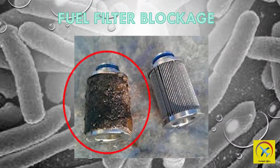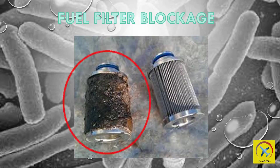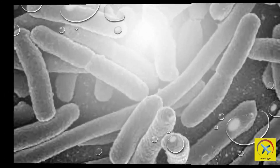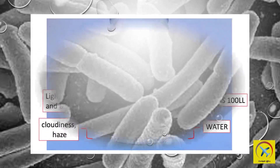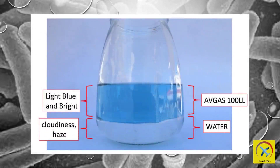Water occurs in aviation fuels in two forms: dissolved and free. All aviation fuels dissolve water in varying amounts depending upon fuel composition and temperature. Dissolved water in fuel is similar to humidity in air. Lowering fuel temperatures will cause dissolved water to come out of solution as free water, somewhat like fog comes out of air. The creation of free water occurs at a rate of about one part per million per degree Fahrenheit.